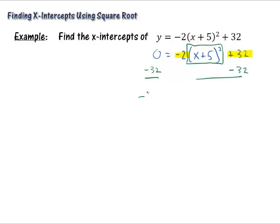And that gives me -32 = -2(x + 5)². Now I've still got to get this squared part by itself. So I still have this -2 out in front. It's multiplied by the parentheses so I have to divide by -2. And then divide the left side by -2 also. -32 ÷ -2 = 16. And these two -2's cancel and I'm left with (x + 5)².